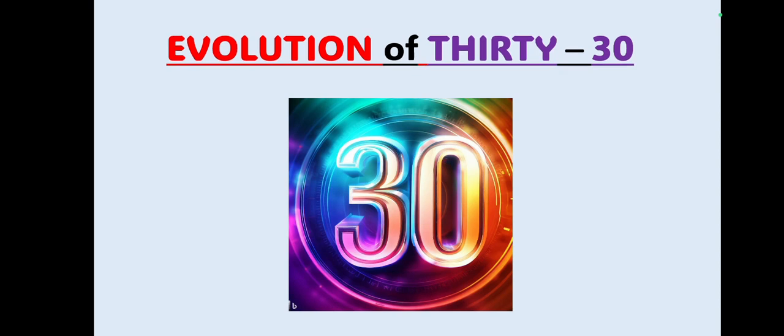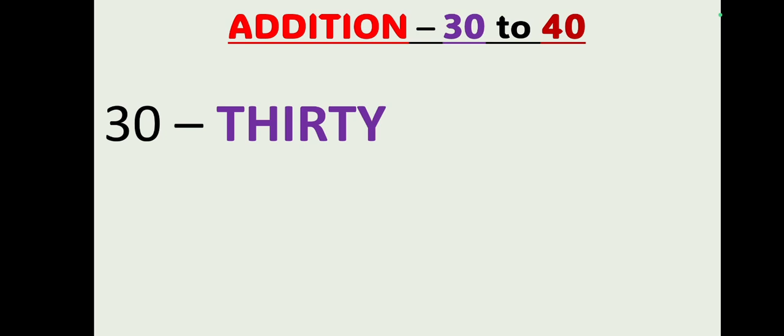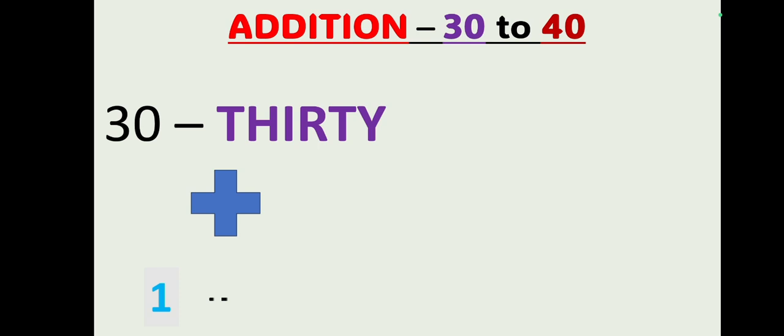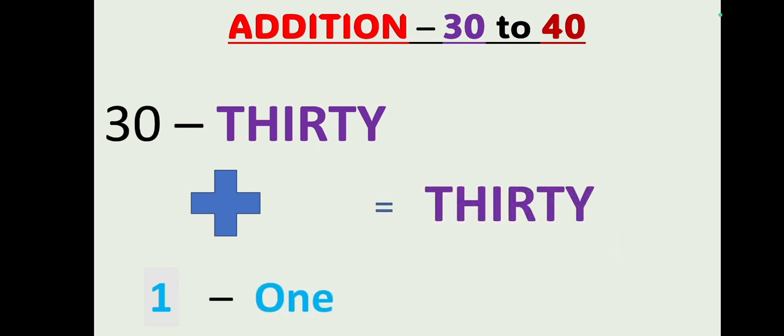Since we know how to count from 20 to 30, we are going to see how the evolution of 30 started. The evolution of 30 started again with the addition method. We are going to learn the 30 series — 31, 32, and so on. Since we know the spelling of 30, just add 30 with 1 and you will get 31.